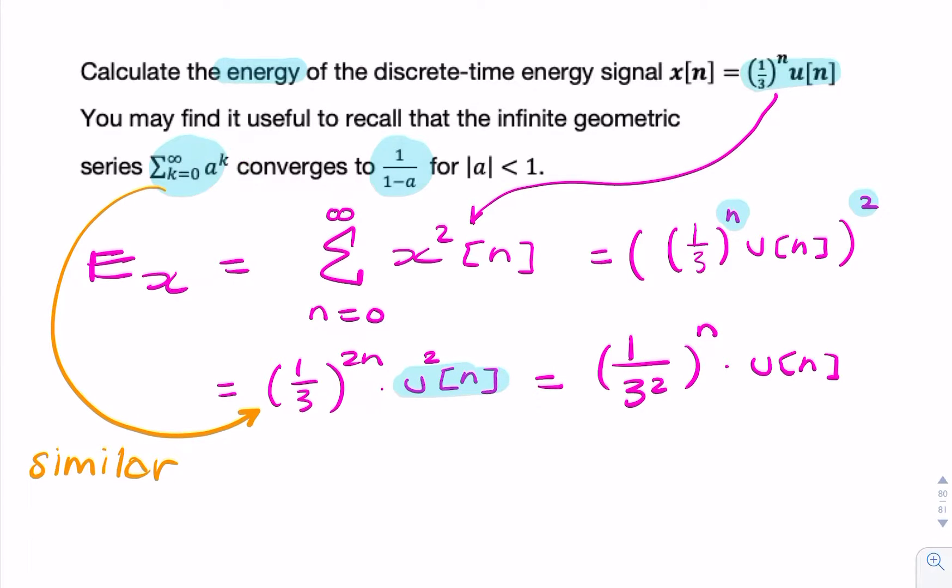I can even write it like this: it's a summation from k equals 0 to infinity of 1 over 9 to the power k. So 1 over 9, that is my value for a, that's that value there.